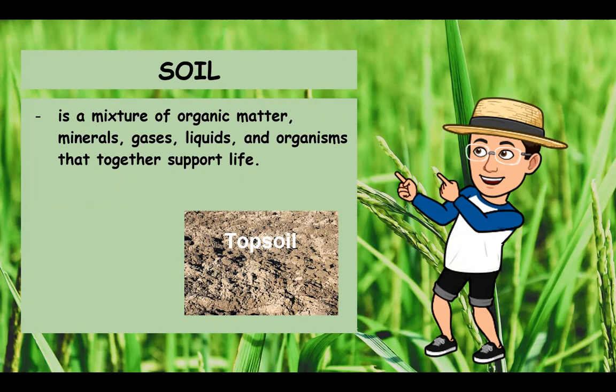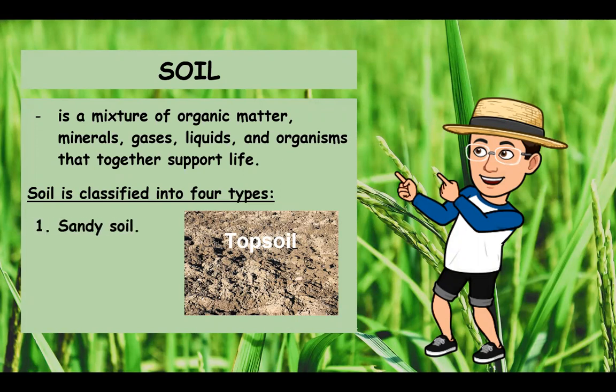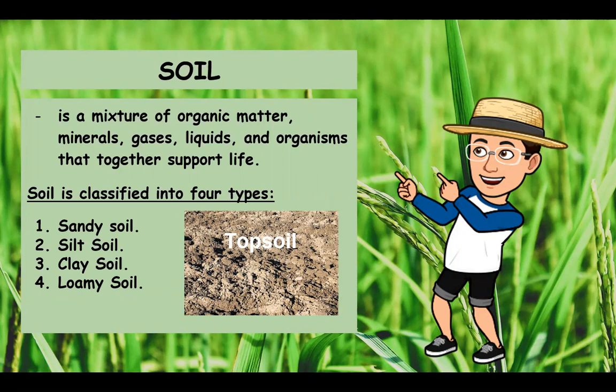There are different kinds of soil classified into four types: sandy soil, silt soil, clay soil, and loamy soil. The texture and chemical composition of soil determine the kind of plants that can grow well in a particular location. Plants that grow naturally in a certain type of soil are adapted to its texture and mineral content, and are able to absorb water and extract minerals from it. These nutrients are essential for plant growth.